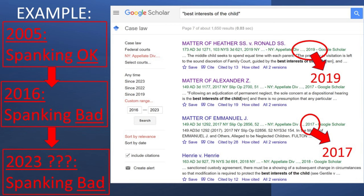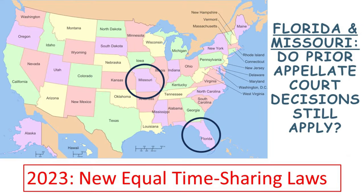However, rules don't really change that much over time — I'm telling you this just so you're aware of this possibility. Also, Florida and Missouri passed new 50-50 custody laws in 2023, so with new laws it's possible that many of Missouri and Florida's prior appellate court decisions just don't apply. You have to read them and see if they make sense with the new laws in place.